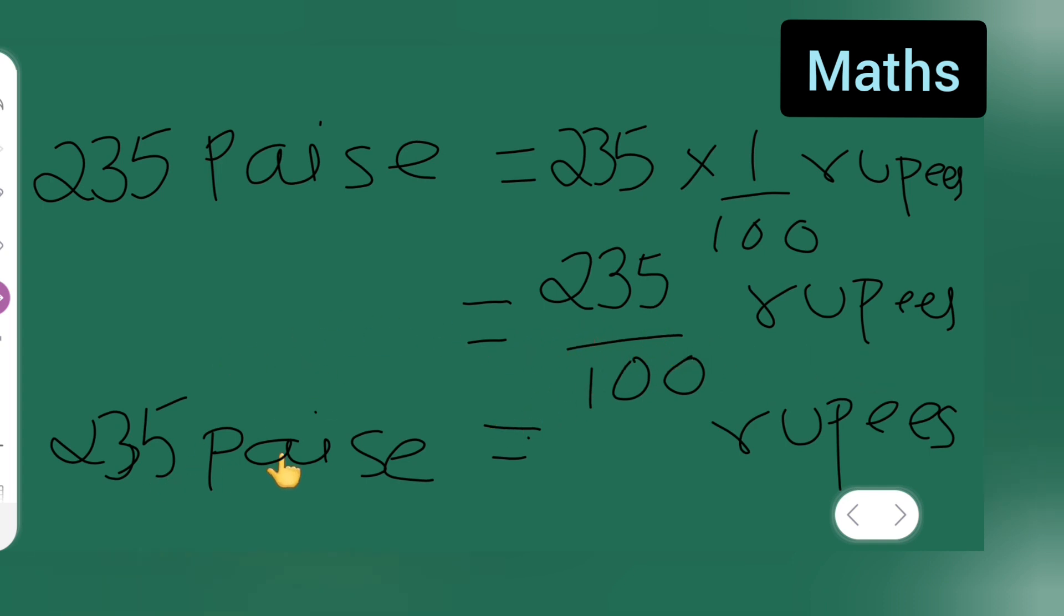Now let us see, now 235 is equal to, now 235 divided by 100 upon 100 is given, right? So use the decimal point. We have to write this in decimal point. So we cannot cancel this. So answer is 2.35, 2.35.